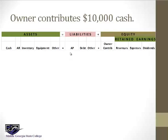Then liabilities: accounts payable — what you owe vendors; debt, which could be loans or other things you owe creditors; and there may be other liabilities. Then equity: what the owners contributed, plus revenues less expenses less dividends. Revenues and owner contributions increase equity; expenses and dividends decrease equity.